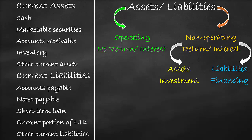Now we will classify each item as either operating or non-operating. Cash: the company does not receive any interest on the cash kept in the company safe. Therefore, cash is an operating current asset. Marketable securities mean the company has a short-term deposit or buys short-term bonds. The company receives interest on the deposit and a coupon on short-term bonds. Therefore, marketable securities are non-operating current assets. Accounts receivable means the company sells a product on credit and collects the money in the future. The company does not receive any interest on accounts receivables. Therefore, accounts receivables is an operating current asset.